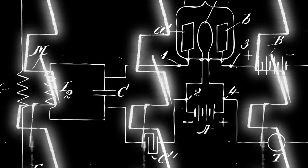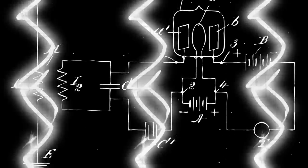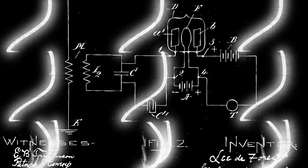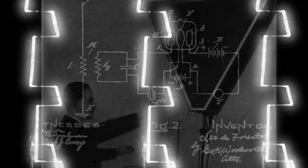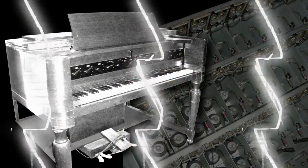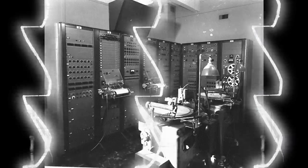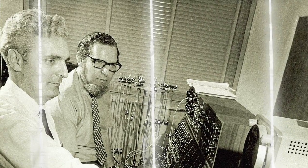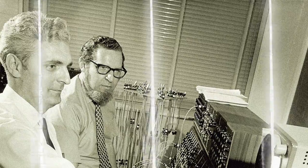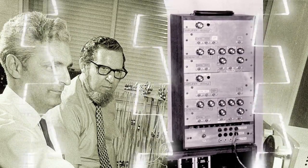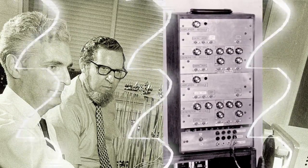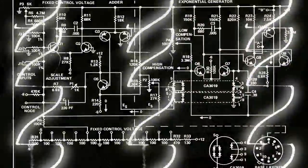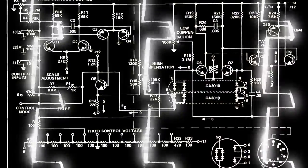The oscillator was the origin of the revolution that became electronic music. From the heterodyning oscillators of Leon Theremin's Theremin, to the tube oscillators of the Nova Chord and of the RCA Mark II, right up to the point where Robert Moog showed Herbert Deutsch how one oscillator's voltage could affect another oscillator's frequency — the oscillator is the core of synthesis.